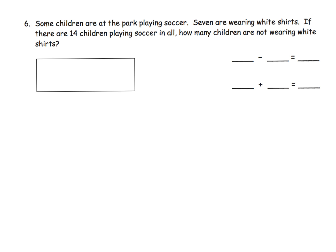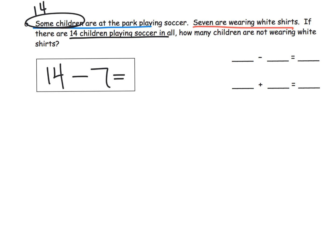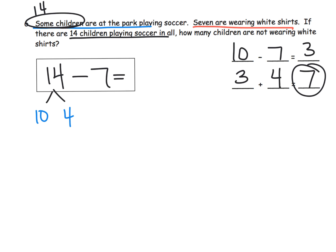Just one more example. Some children are at the park playing soccer — 7 are wearing white shirts. If there are 14 children playing soccer in all, how many children are not wearing white shirts? So basically we've got 14 minus 7, and we're going to decompose that 14 to be 10 and 4. Our students subtract from 10 to get 3, then add in the original 4 and we get 7.